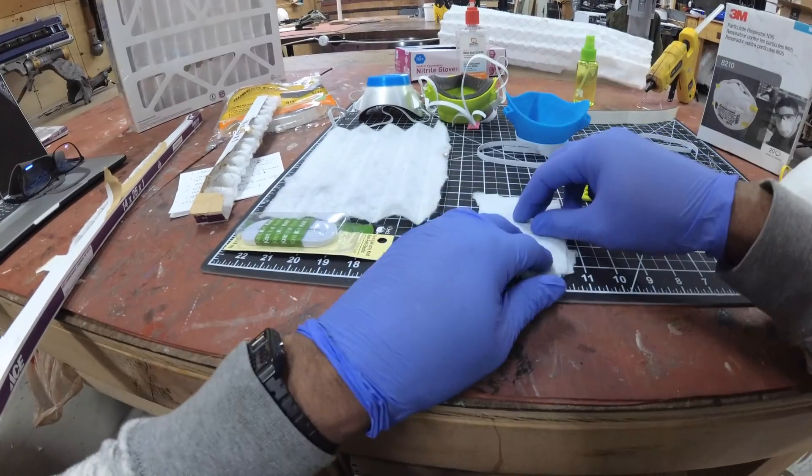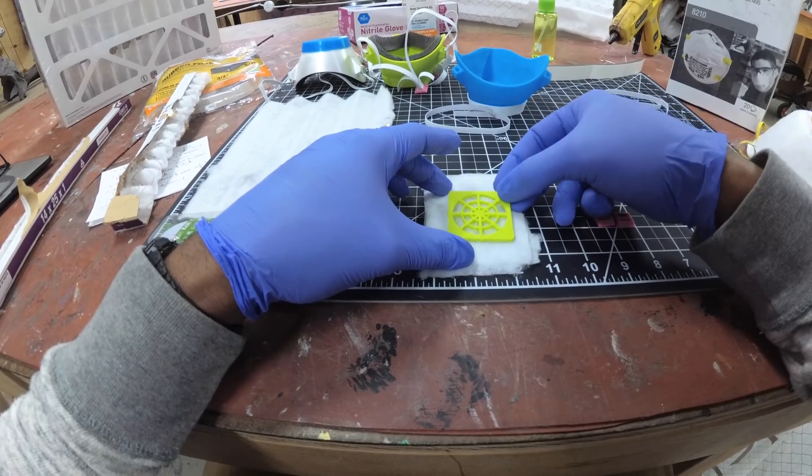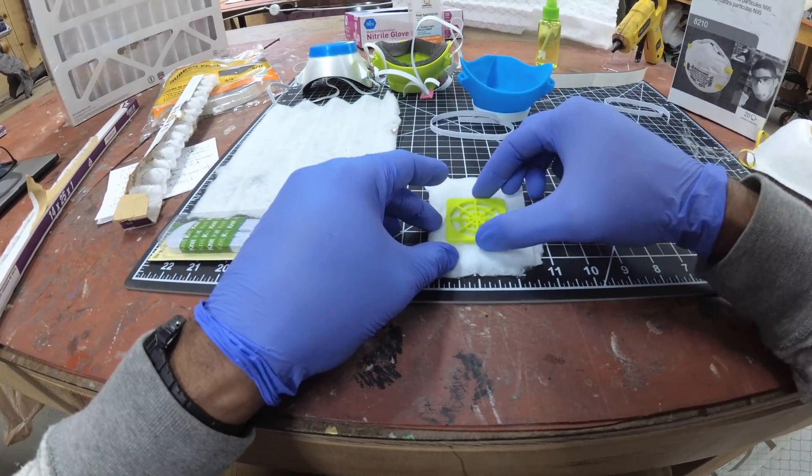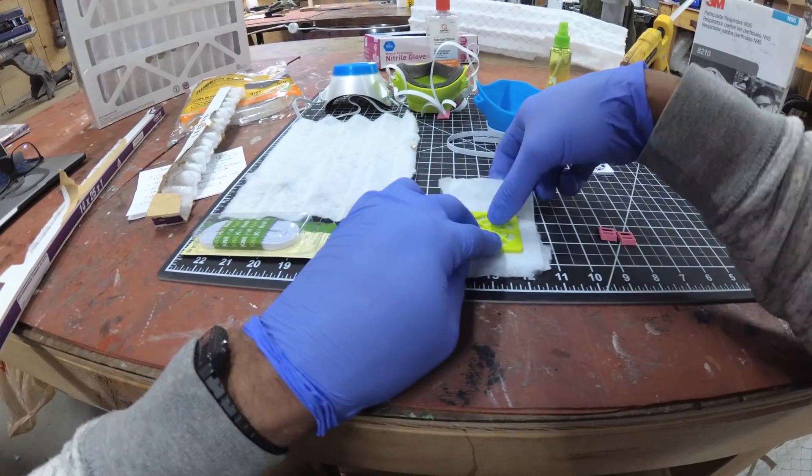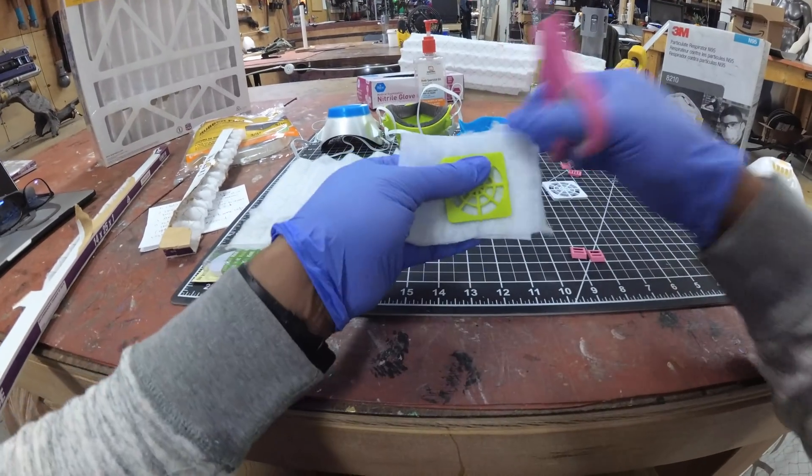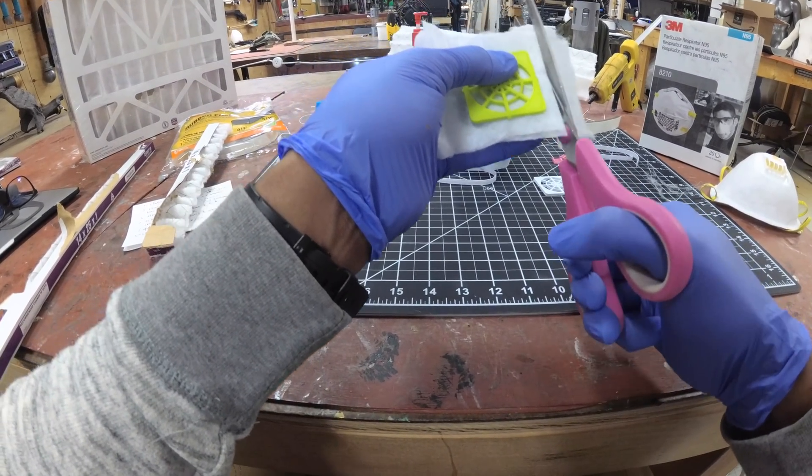The first thing we'll do is grab our inner piece here and we're gonna cut it about a quarter to a half inch more than its actual size. Go ahead and snip this here.